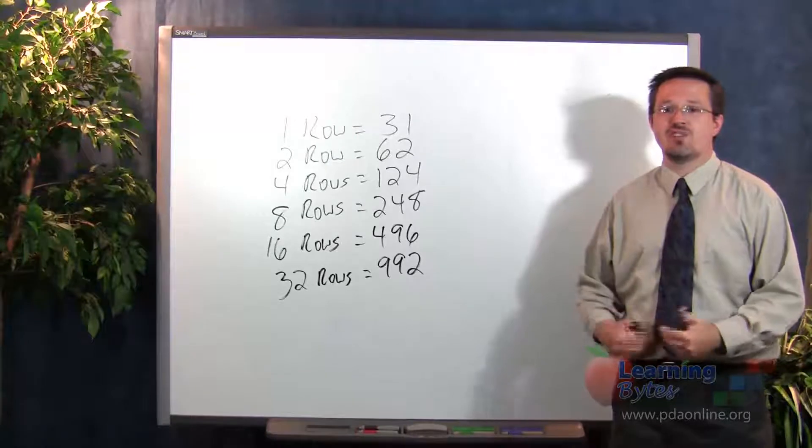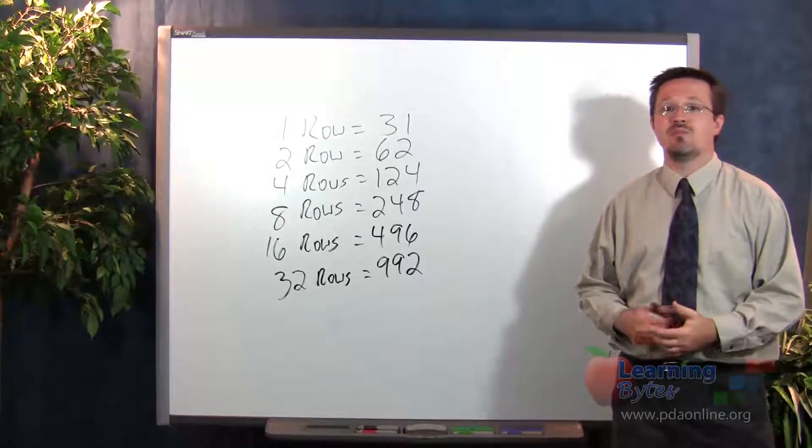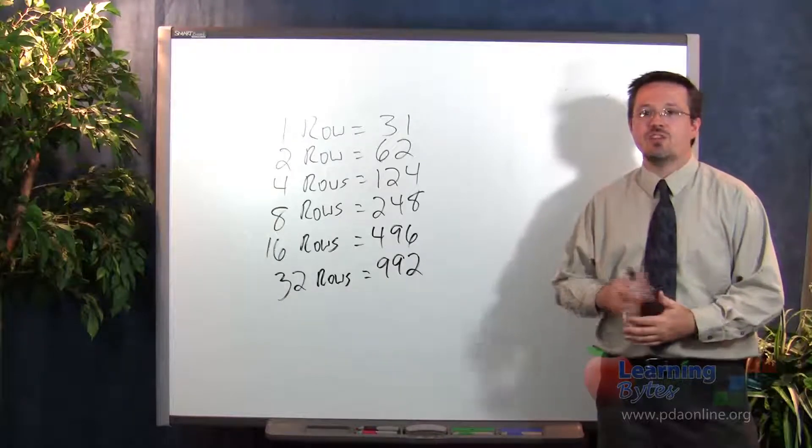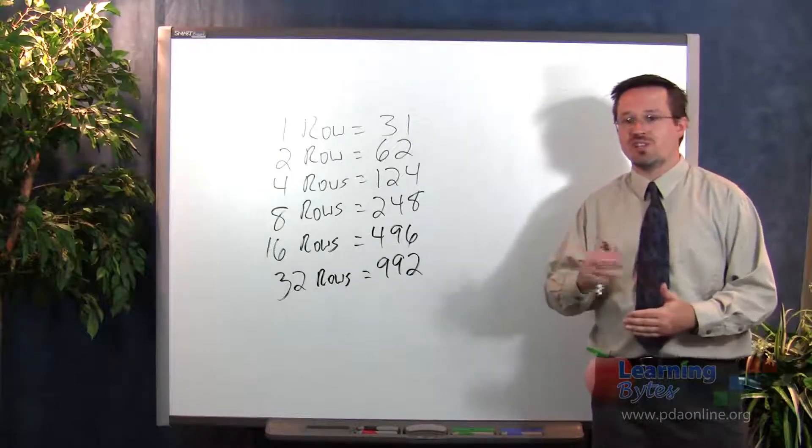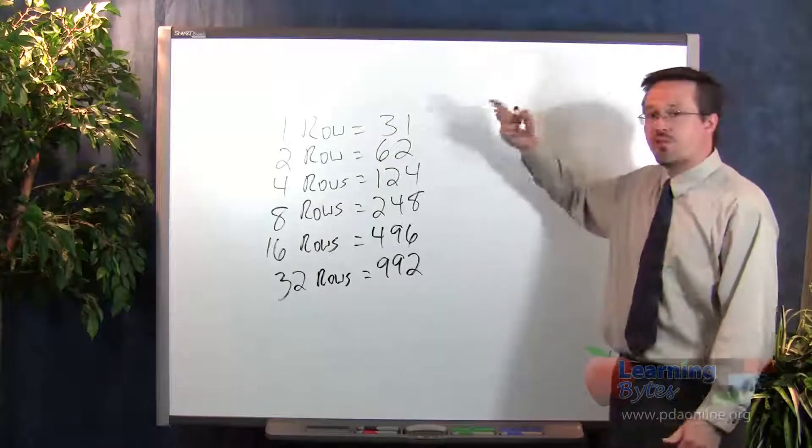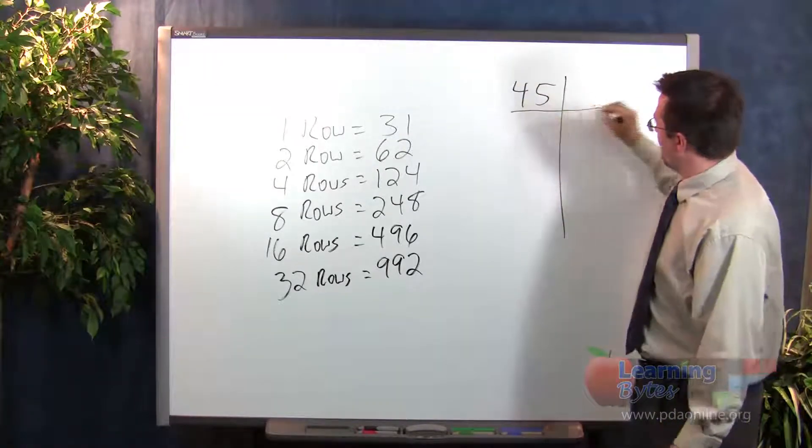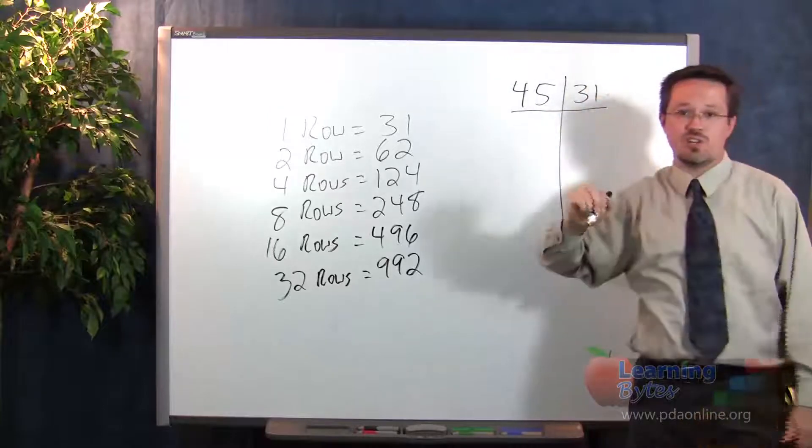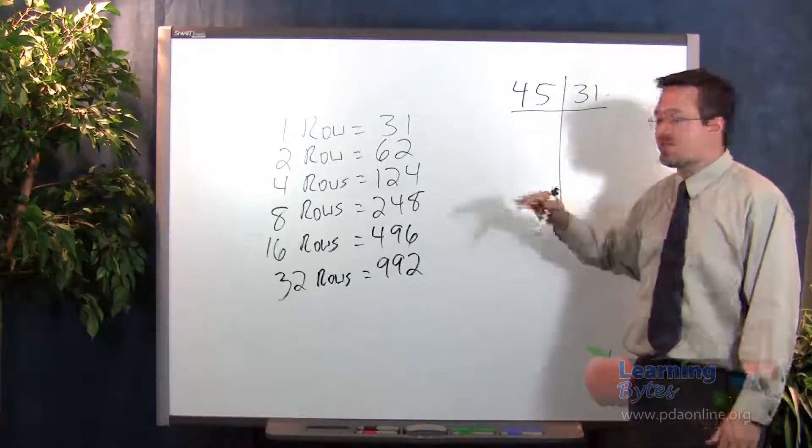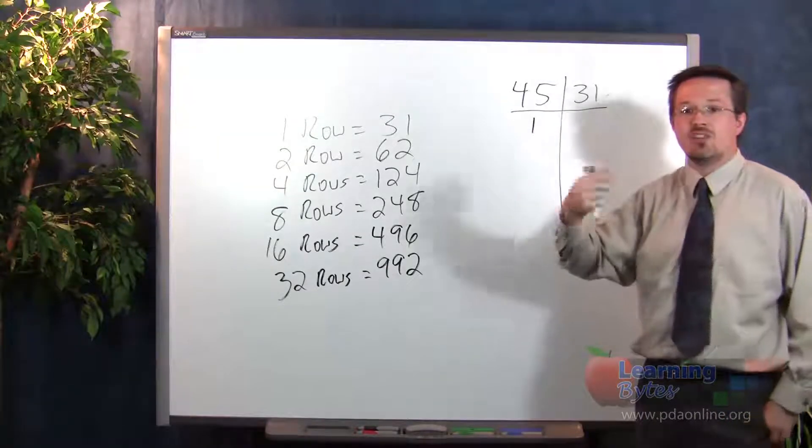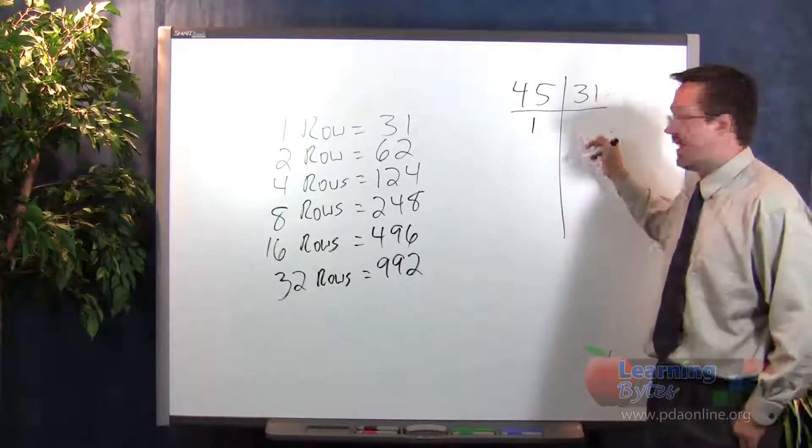After students have had several opportunities to solve problems informally using duplation, you want to help them to formalize the process. Duplation is normally written with a t-chart. So for the example that we used, we had 45 rows with 31 students in each row. The way that this works is to first write a 1 on the left-hand side and then to reproduce the 31 on the right-hand side.